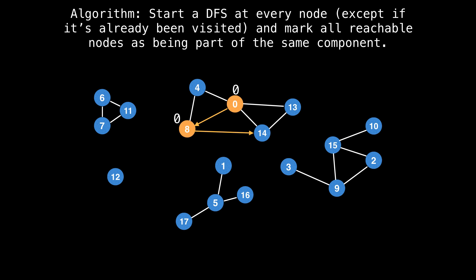So we go to eight, give it an ID of zero. 14 gets zero, 13 also labeled with a zero, then backtrack like you do in a depth first search. Then explore node four, give it an ID of zero, and then finish exploring that component and move on to the next node in order.